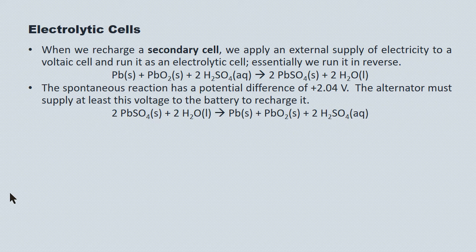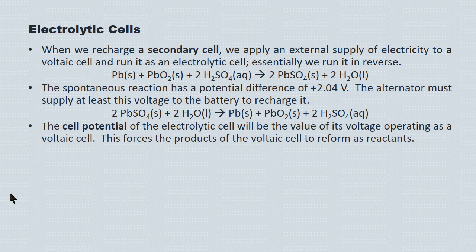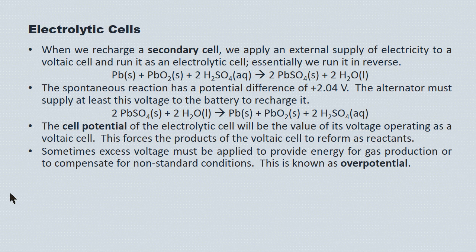Here's the non-spontaneous reaction that the alternator drives — it's exactly the reverse of the spontaneous reaction. The cell potential for the electrolytic cell will be the value of its voltage operating as a voltaic cell, and if you apply this from an external source it forces the products of the voltaic cell to reform its reactants. In some cases, an excess voltage must be applied to provide energy for gas production or to compensate for non-standard conditions. This is known as overpotential, and we'll look at an example.